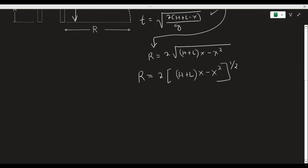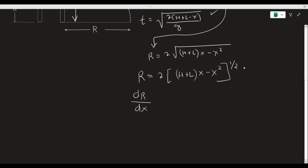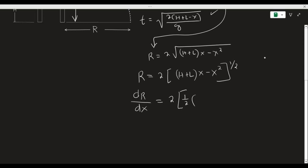This is the formula for the horizontal distance traveled by the water. In order to obtain the value of x such that r yields the maximum value, we need to differentiate r with respect to x. First we write down the constant, then we apply the power rule. The exponent is one half, the inside function is xh + lx − x², so we subtract one from the exponent — one half minus one is negative one half.